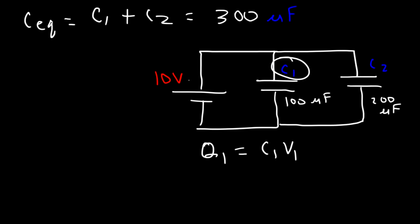C1 is connected directly across the battery, so it has a voltage of 10 volts when it's fully charged. And the same is true for C2. They will all have the same voltage.